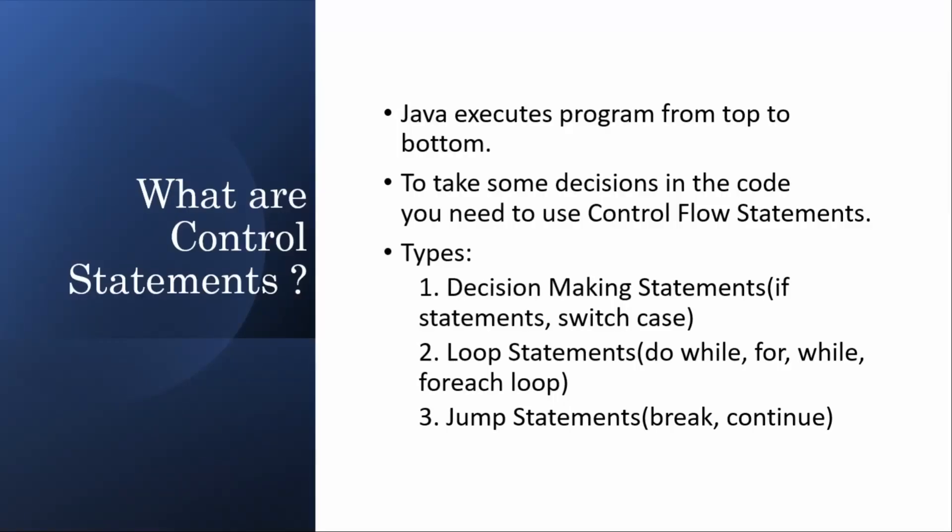When you want to execute a program in Java, at certain points you need to make decisions — what has to be done when the following condition is true? For example, in an even-odd example: if the number is even, what has to be done? If the number is odd, then what has to be done? To make these kinds of decisions, we use control statements.